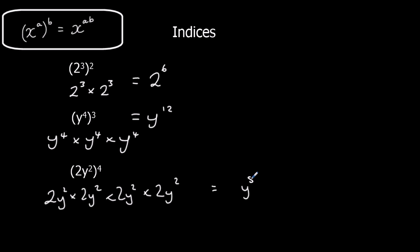Now if we just look at the numbers, we've got 2 times 2 times 2 times 2. Be careful not to just add the 2s or leave the 2 as it is — we've got to multiply them all together. So 2 times 2 is 4, times 2 is 8, times 2 is 16. So the final answer is 16y to the power of 8.